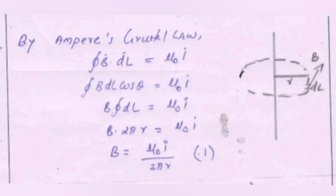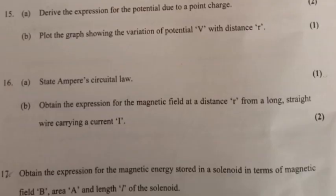Part B: By Ampere circuital law, integral B dot dL equals μ₀I. Integral B dL cos θ equals μ₀I. B integral dL equals μ₀I. B times 2πr equals μ₀I. Therefore, B equals μ₀I by 2πr.